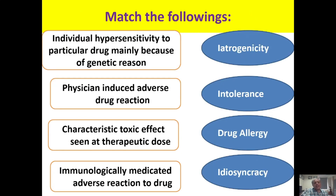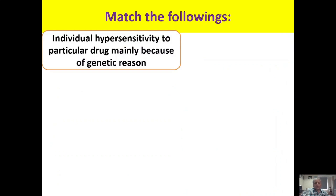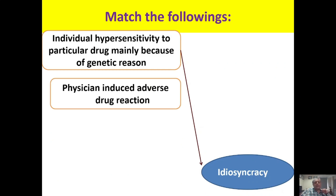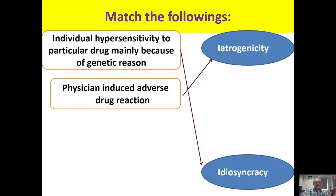Match the types of adverse drug reactions with correct terminology. Individual hypersensitivity to a drug mainly due to genetic reasons is known as an idiosyncratic reaction. Physician-induced adverse drug reaction — where the drug itself causes an adverse reaction not normally seen — is called iatrogenicity or physician-induced disease. For example, NSAIDs causing peptic ulcers.